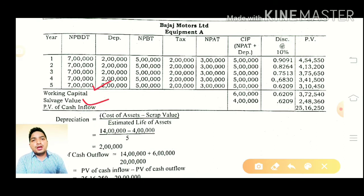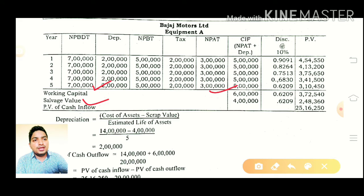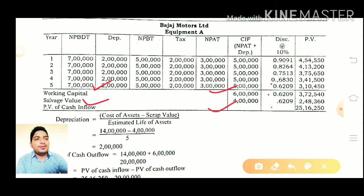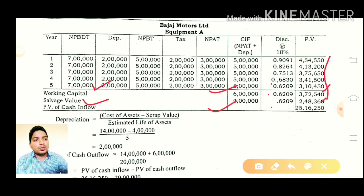We account for working capital and salvage value in the fifth year. We use the discount factor, applying the PV factor to create the present value. Finally, we total all the present values to get the total PV cash inflow.